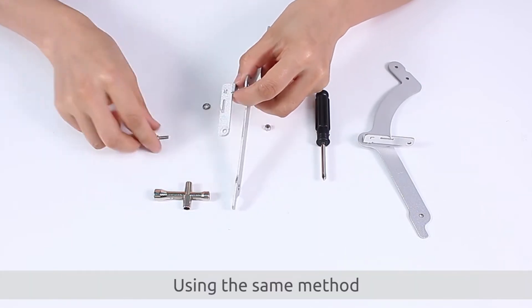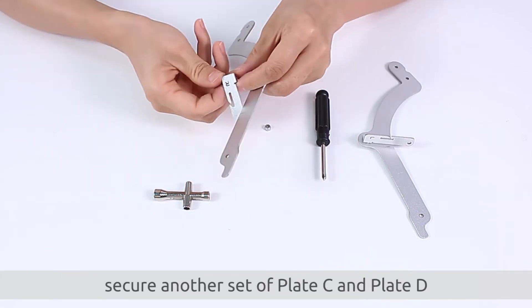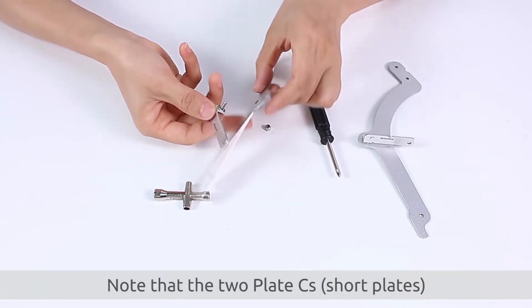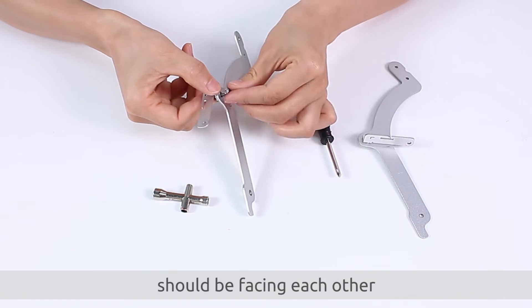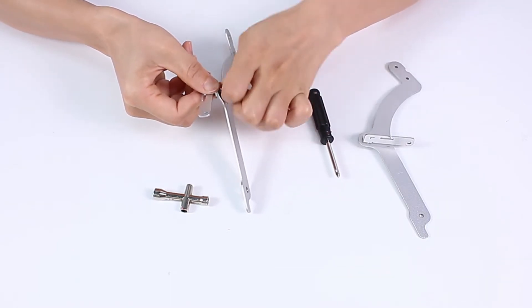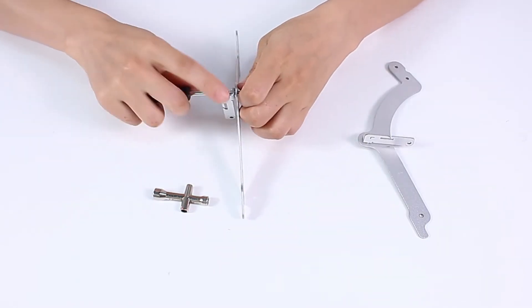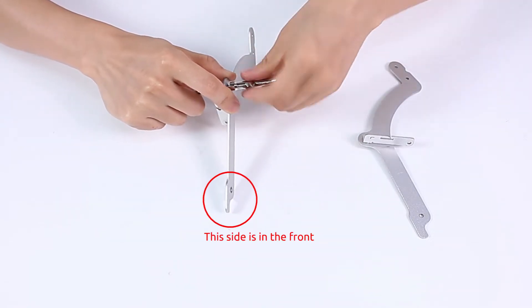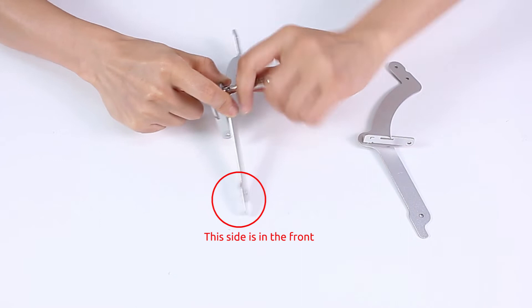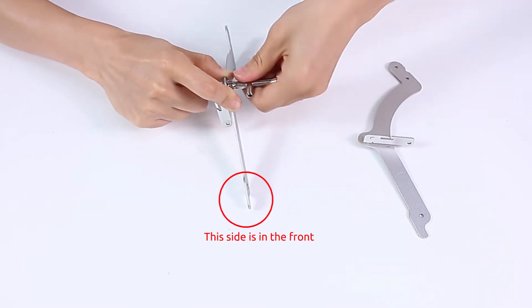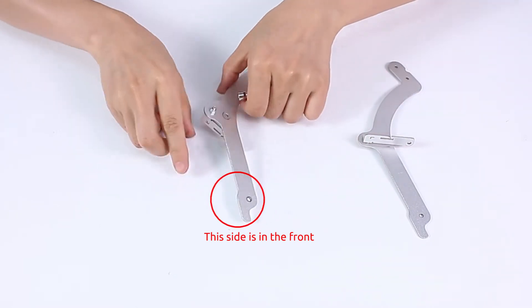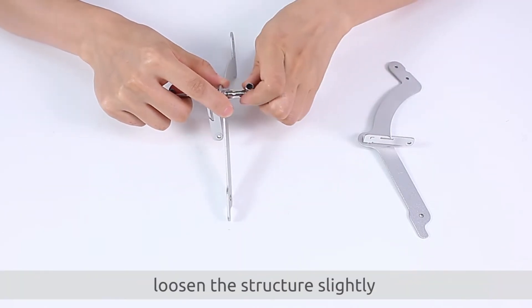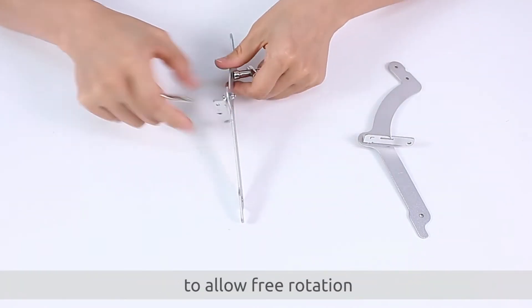Using the same method, secure another set of plates E and plate D. Note that the two plates C short plates should be facing each other. Again, loosen the structure slightly to allow free rotation.